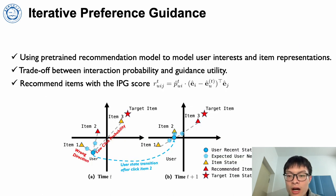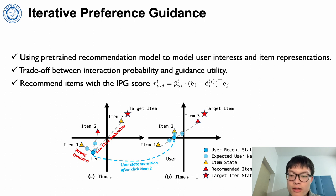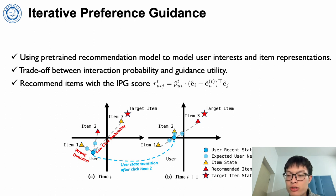The idea behind our proposed Interactive Preference Guidance (IPG) is threefold. Firstly, we use a pre-trained recommendation model to model user interests and item representations. With these representations, we plan to do trade-offs between interaction probability and guidance utility, which constitute the IPG score. Finally, we recommend items according to the IPG score.